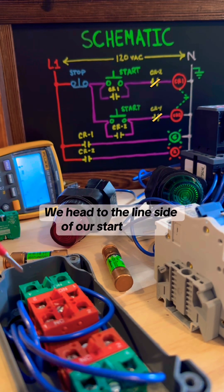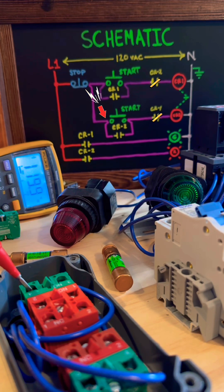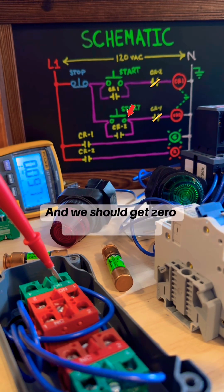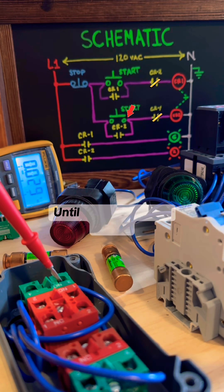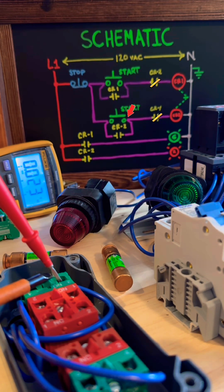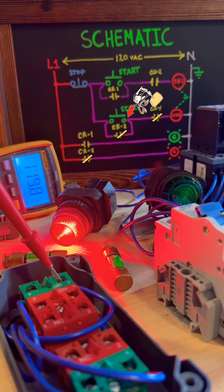We head to the line side of our start button. 120 volts, that's good. And we should get zero on the load side until we activate the circuit. 120.